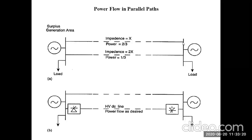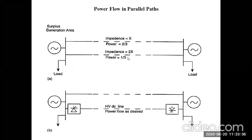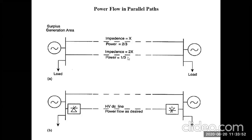In Figure A, if another line has impedance 2X — higher than the first — the power transfer in that line is only one-third, whereas the first line carries two-thirds. This means that as line reactance increases, losses increase. The question then is: what alternative measures can we take to reduce losses and increase capacity?